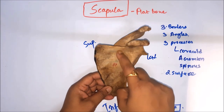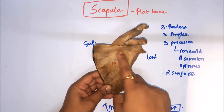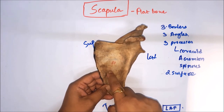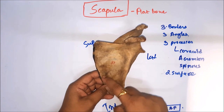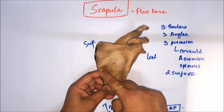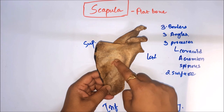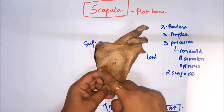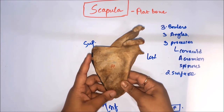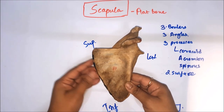The anterior surface, being concave, is also known as the subscapular fossa, and it gives attachment to the subscapularis muscle. The subscapularis is a multipinnate muscle, and because of this multipinnate attachment, striations are formed on the anterior surface — these striations are formed by the subscapularis muscle, which is multipinnate in nature.